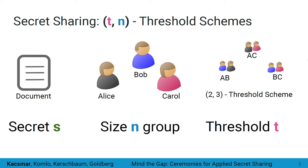The size of the subset required to access the secret is referred to as the threshold T. In this case, Alice, Bob, and Carol have decided on a 2-of-3 threshold scheme to ensure they can still access their secret if one of them is no longer available. A threshold of 2 also means any one of them can be unavailable and the secret could still be accessed. However, none of them can access the secret on their own.